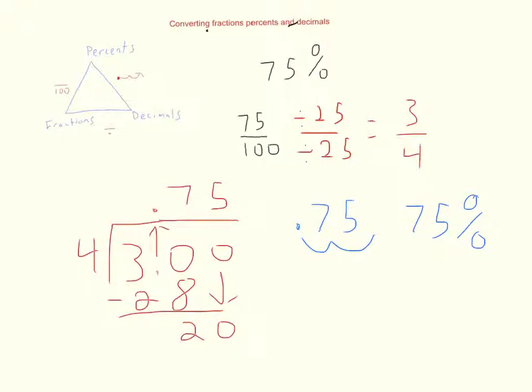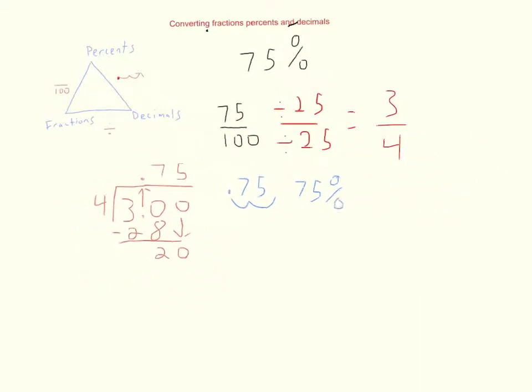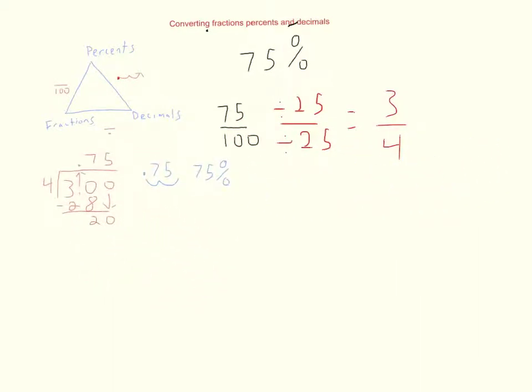Let's go ahead and try a couple more. I'd like you to go ahead and try to make sure you get all the way around the triangle using this. Go ahead and pause your video right now and try to get all the way around before I display the answer. All right, you should have gotten 0.5 for your decimal and 50 percent there.